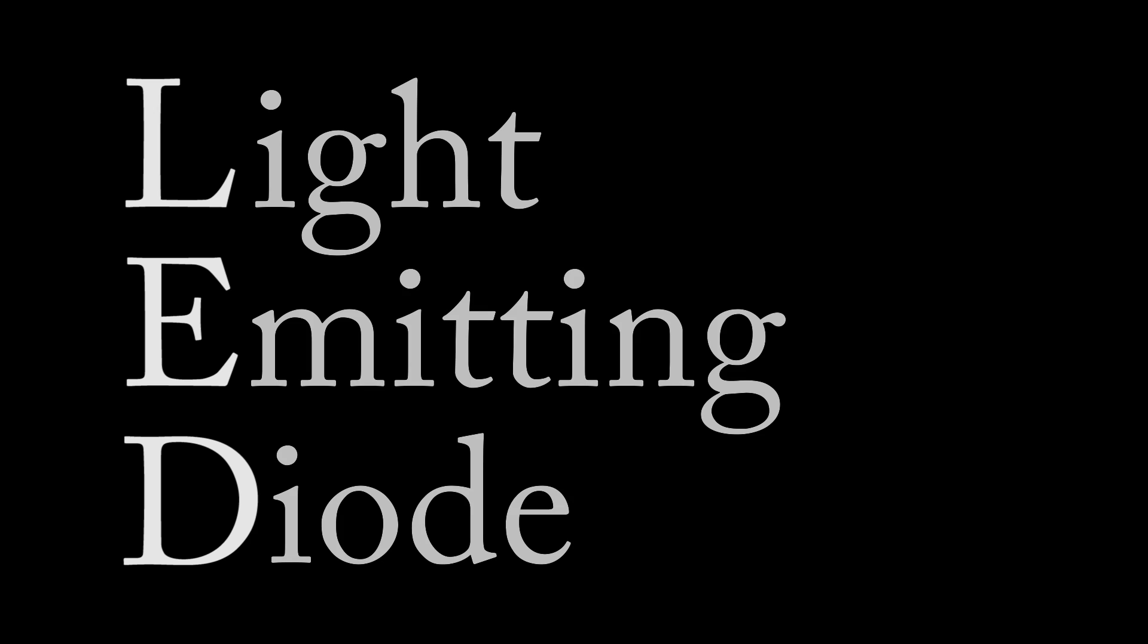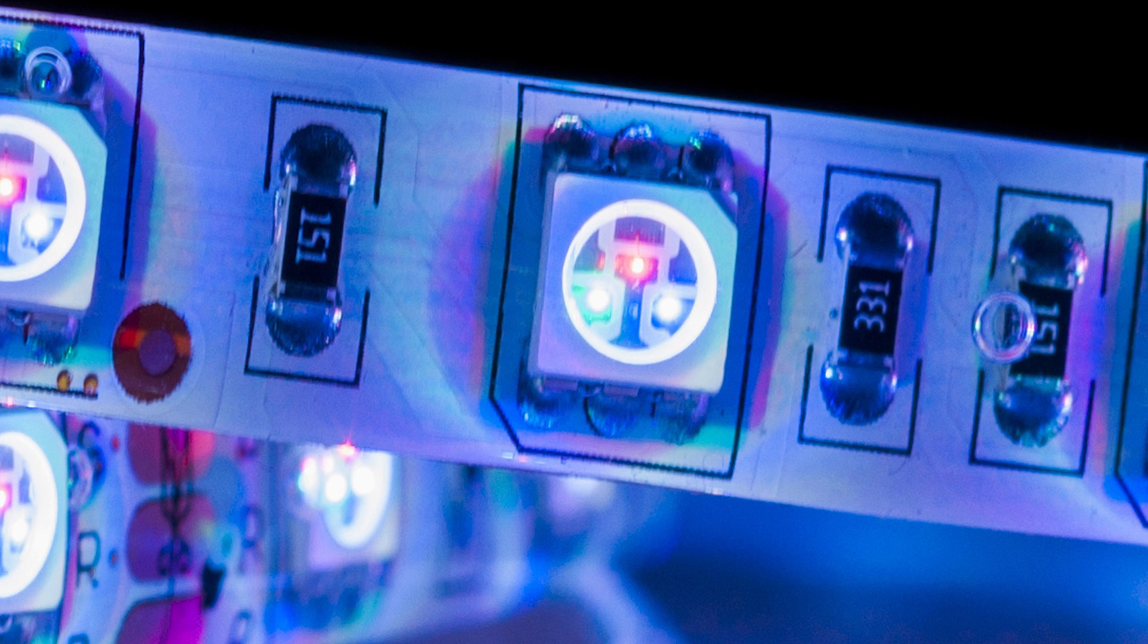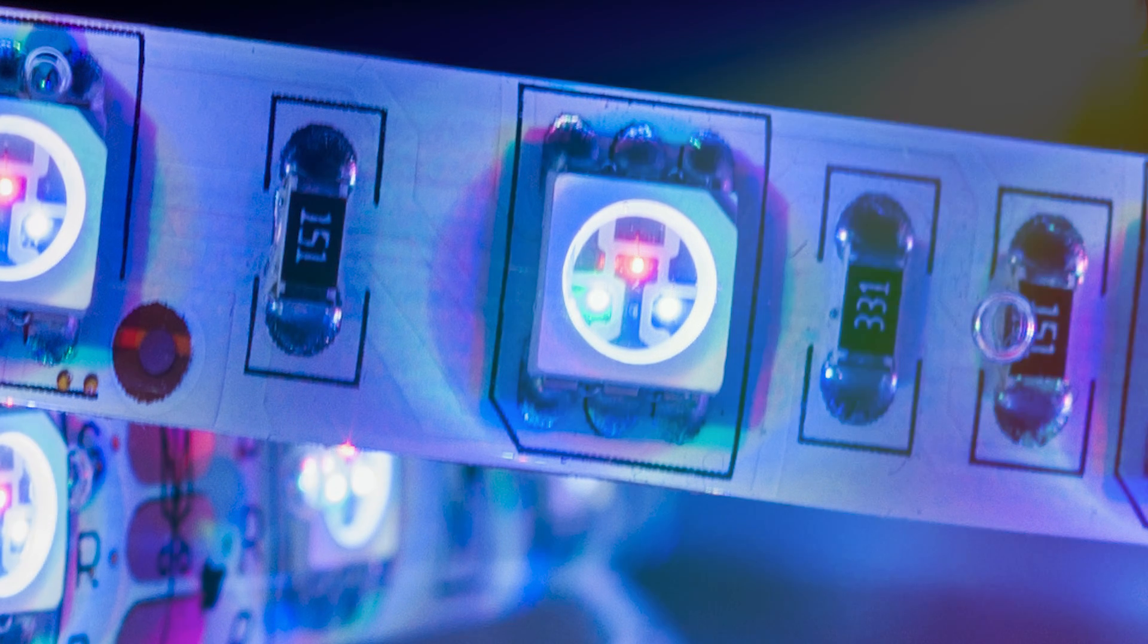To make sure everyone is on the same page, LED stands for Light Emitting Diode. On an LED strip, each light source is typically made up of three diodes: red, green, and blue. In the digital world, red, green, and blue can be used to make any color in the rainbow.